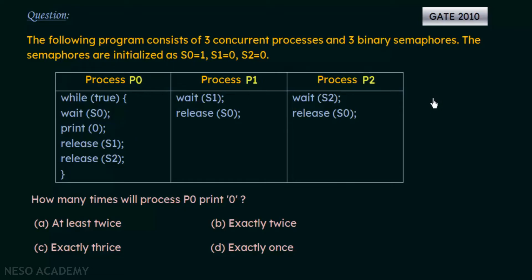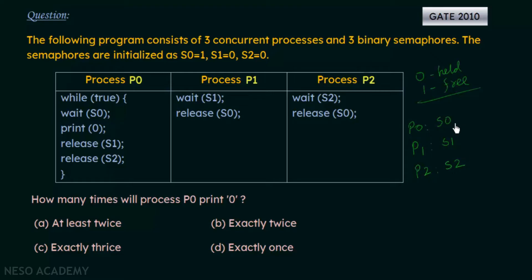Before we solve this, let's keep in mind the key semaphore facts: if the value is 0, the semaphore is being held and cannot be used; if the value is 1, it is free. These are the initial values — S0 is 1, S1 is 0, and S2 is 0.